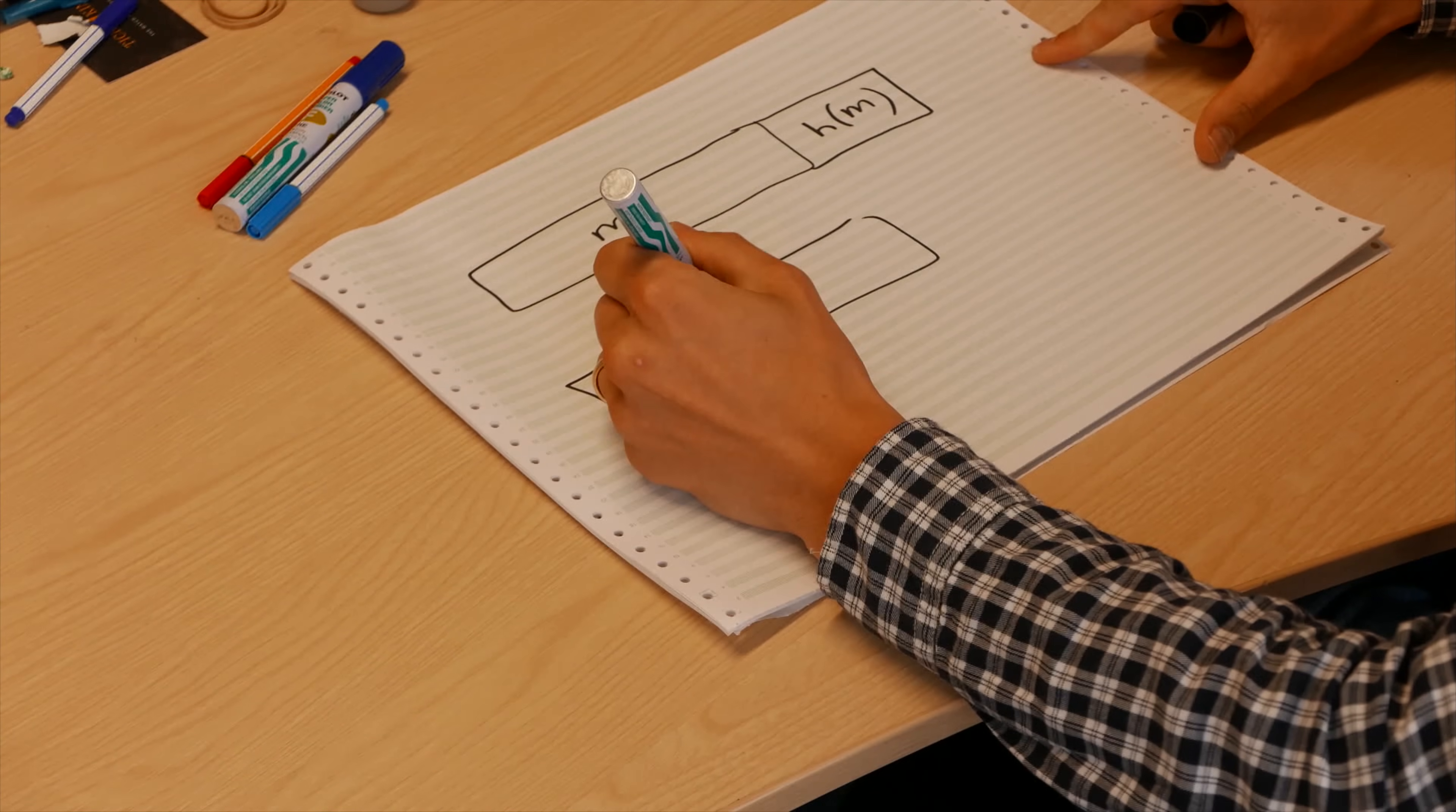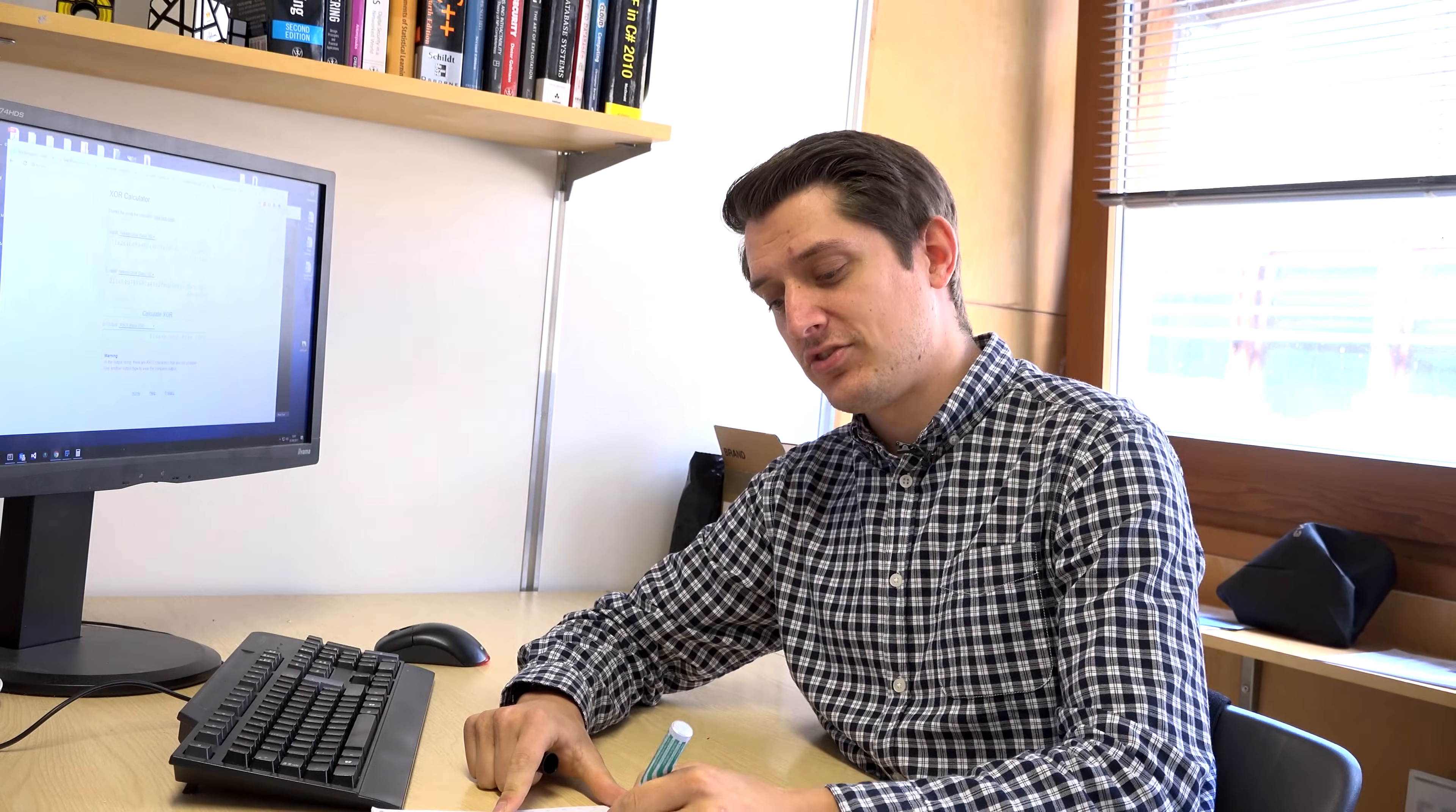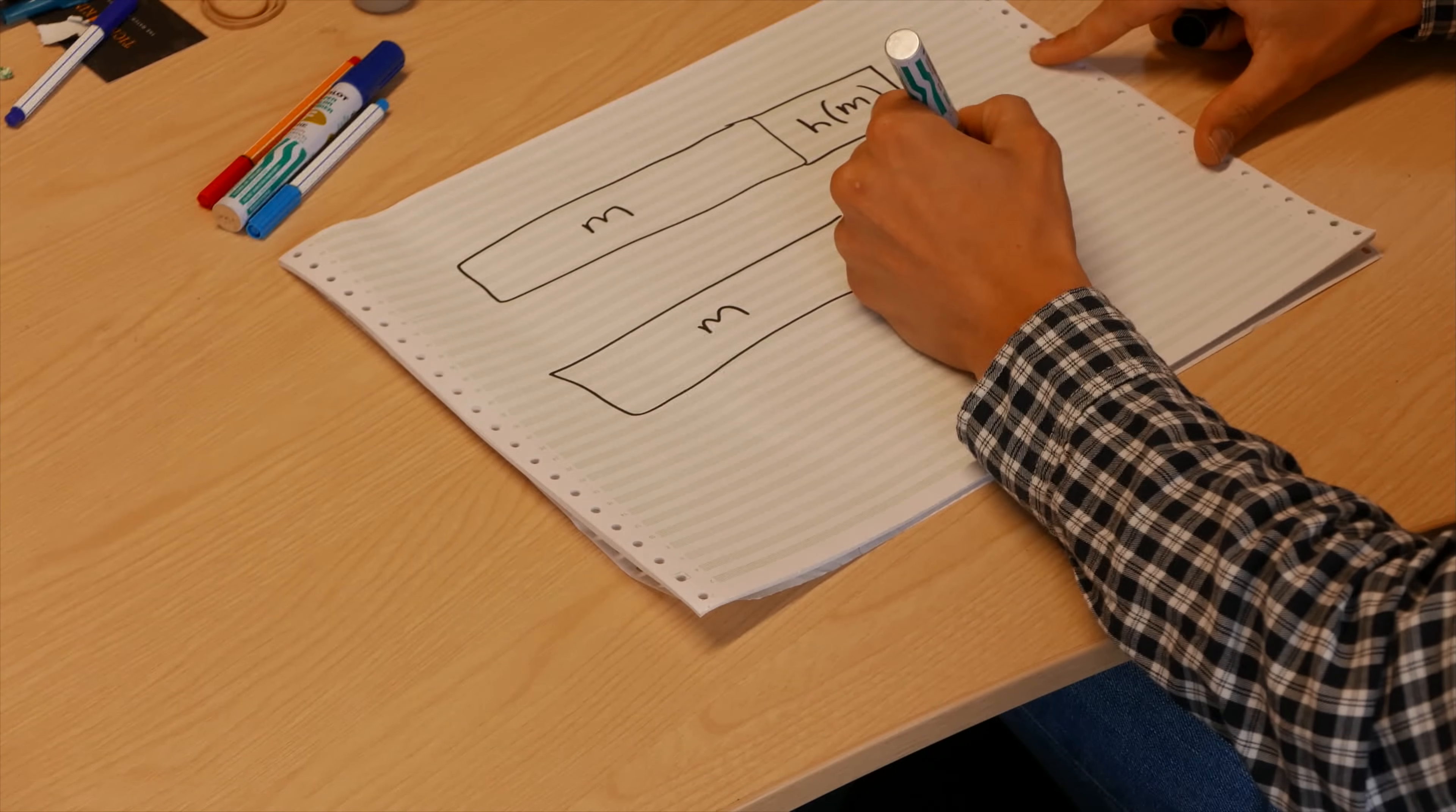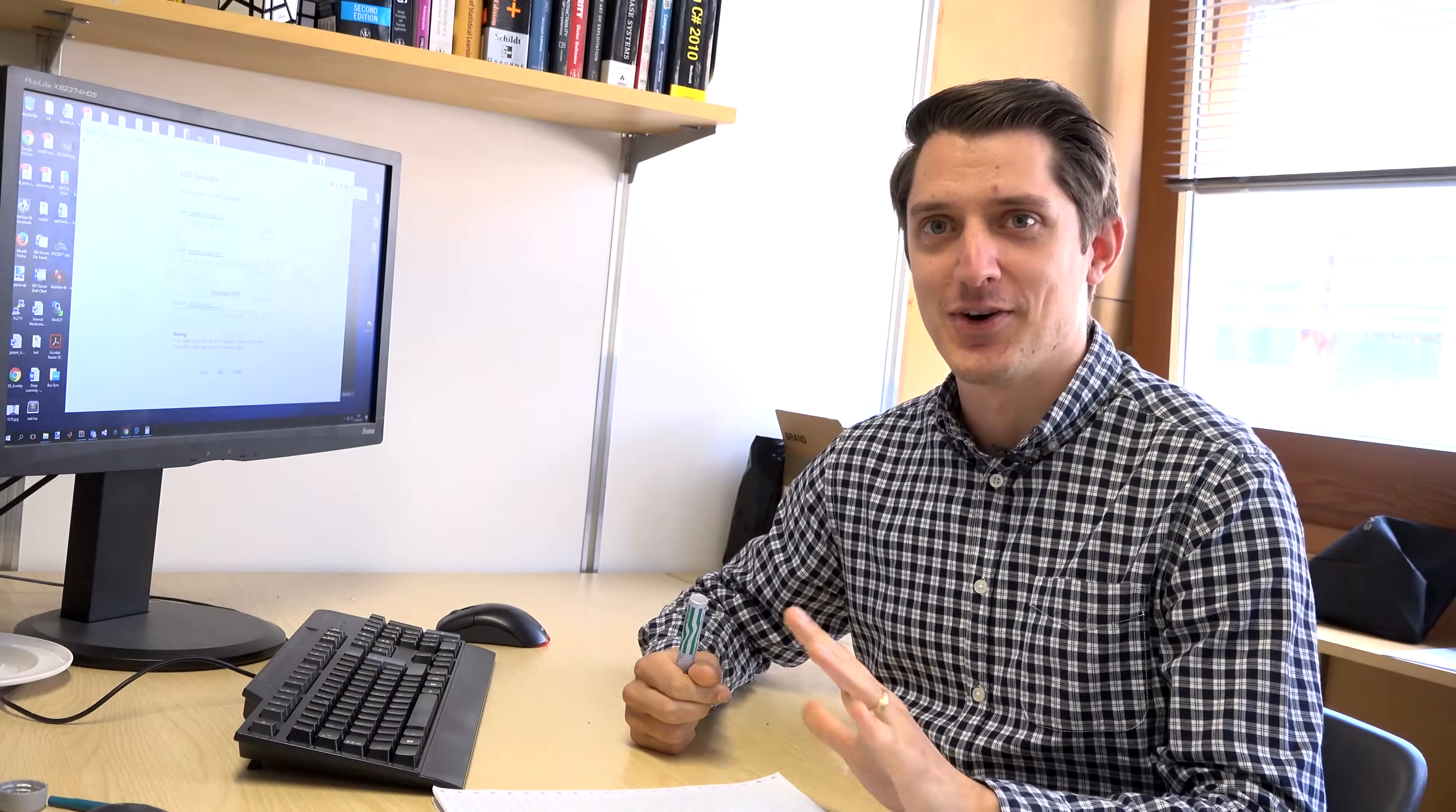So let's imagine that you and I have shared a key K. So we have this secret key that only you and I know. What we can do is we can take our message and we can instead produce a hash of K appended to the message like this. Again, don't quit the video yet, we're not getting ahead of ourselves.